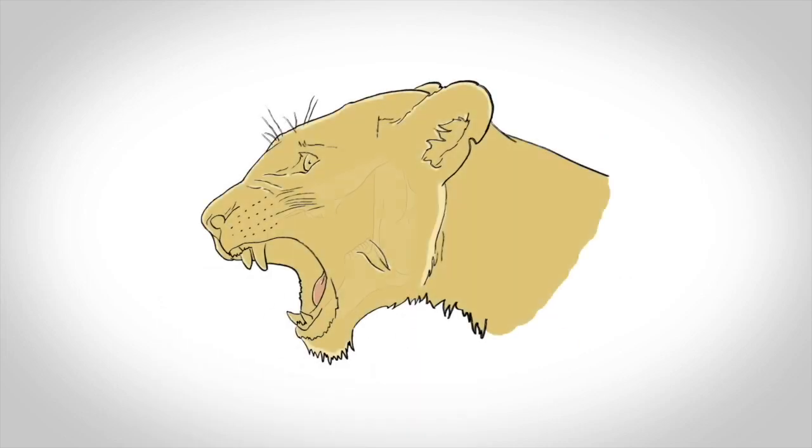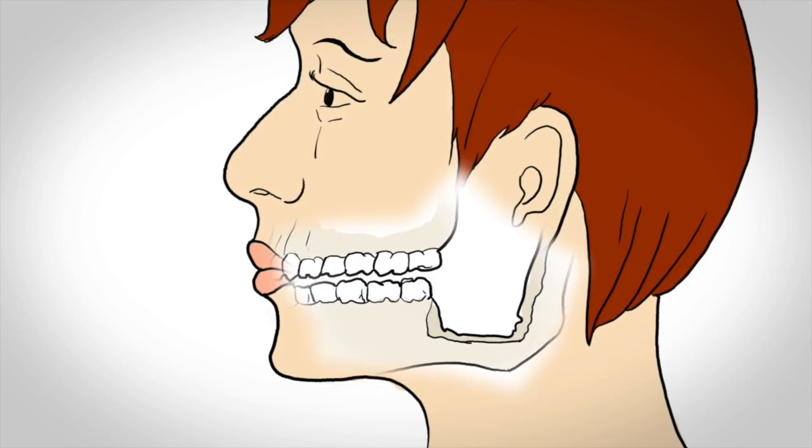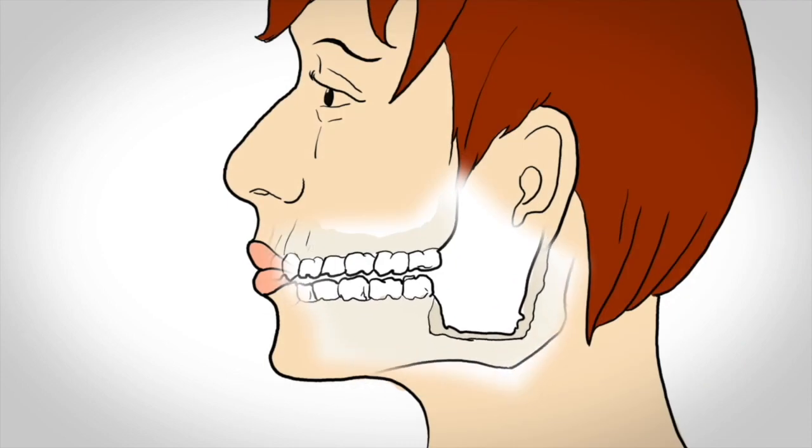Carnivores have hinged jaws designed to swallow big chunks of flesh. Not much chewing. Humans have a jaw that moves side to side like all other herbivores.